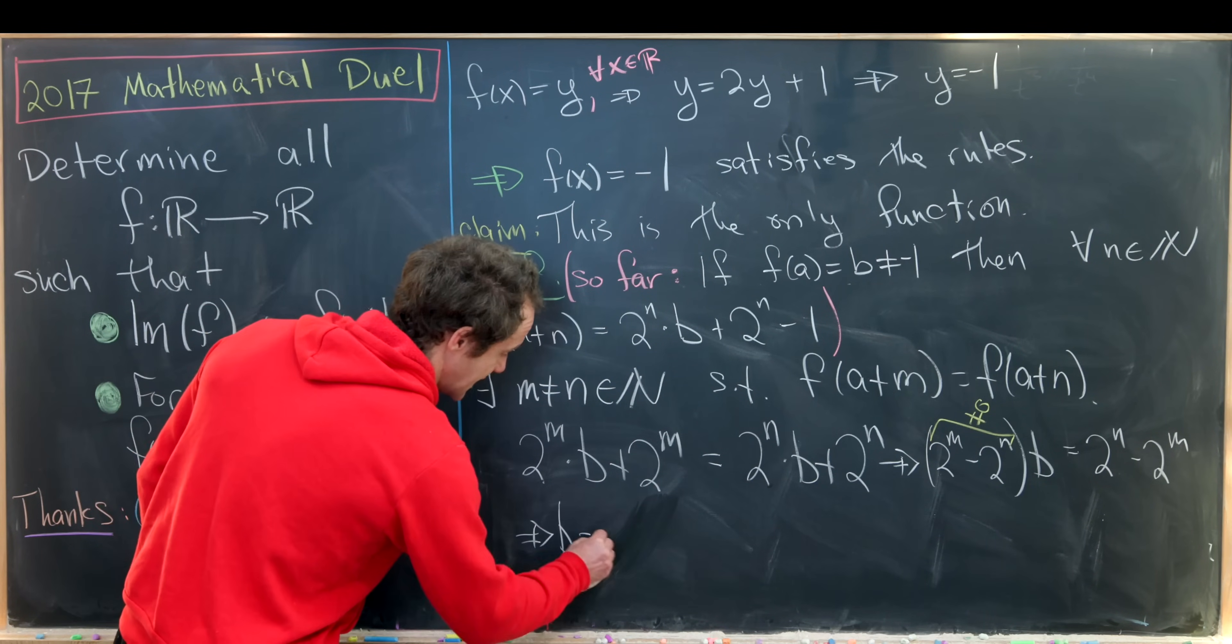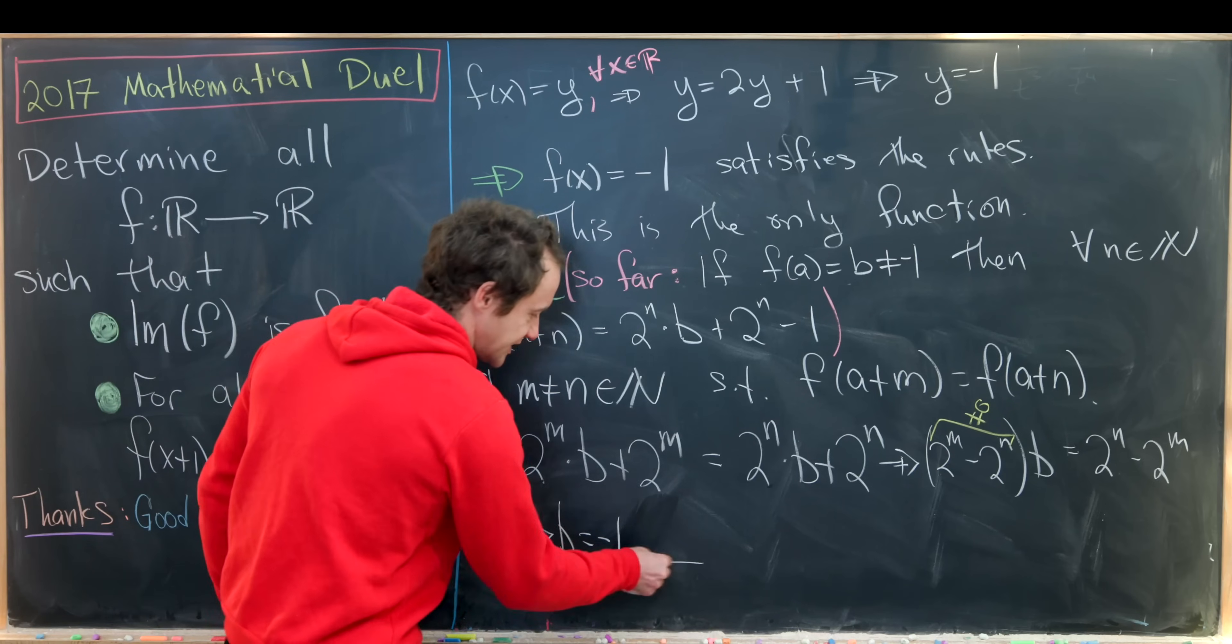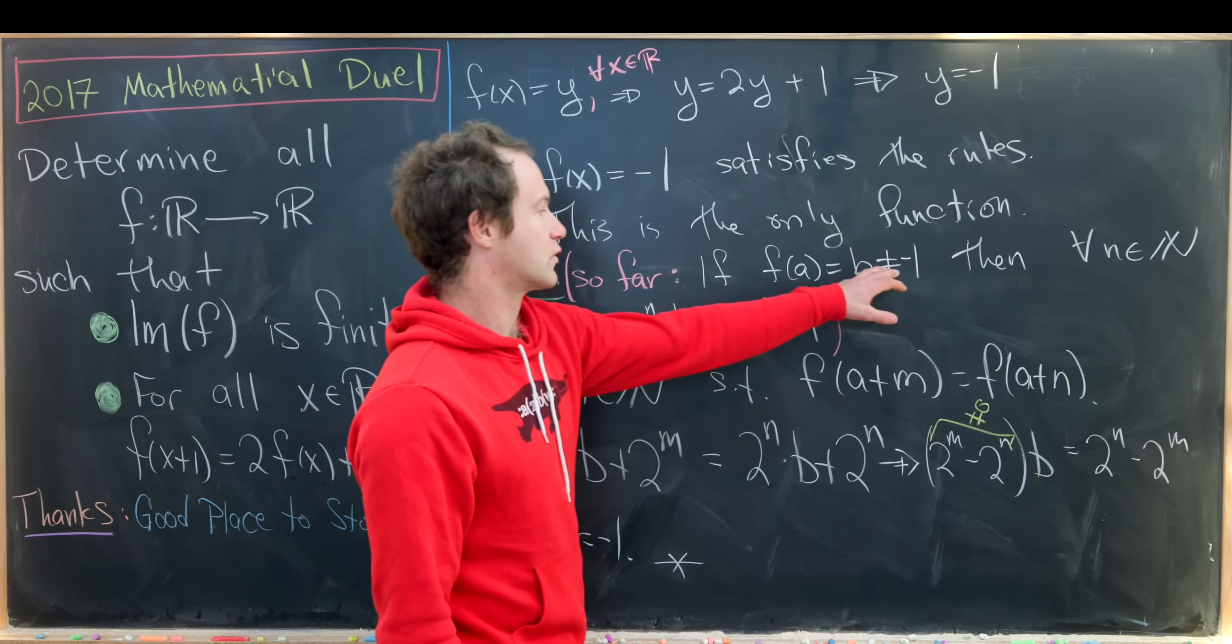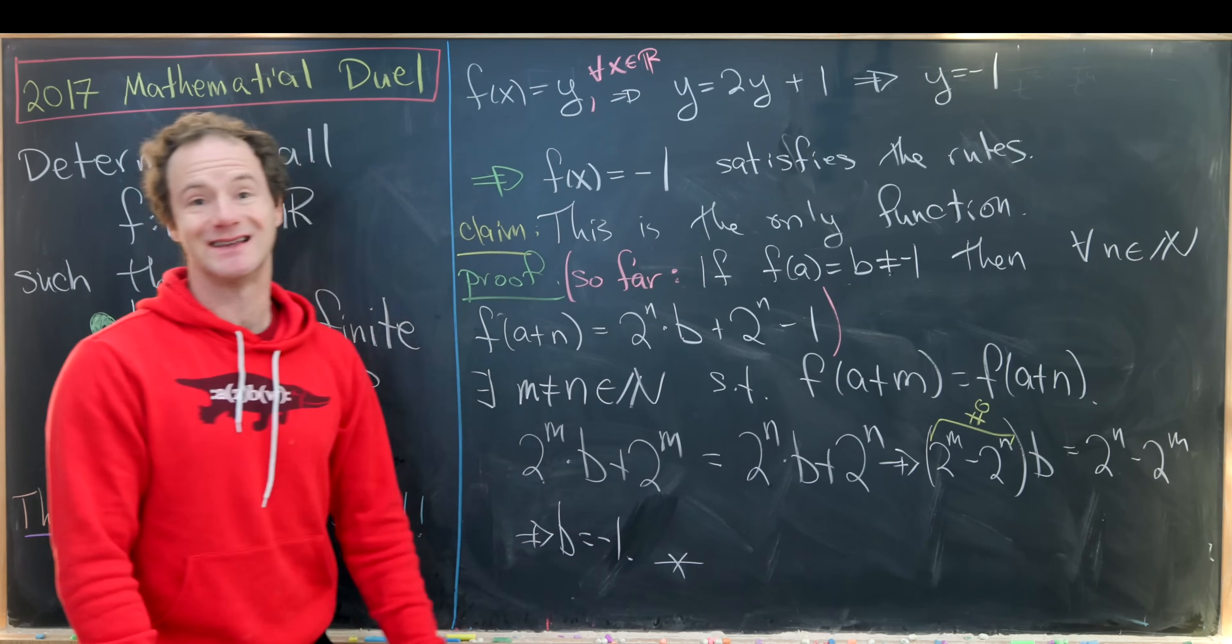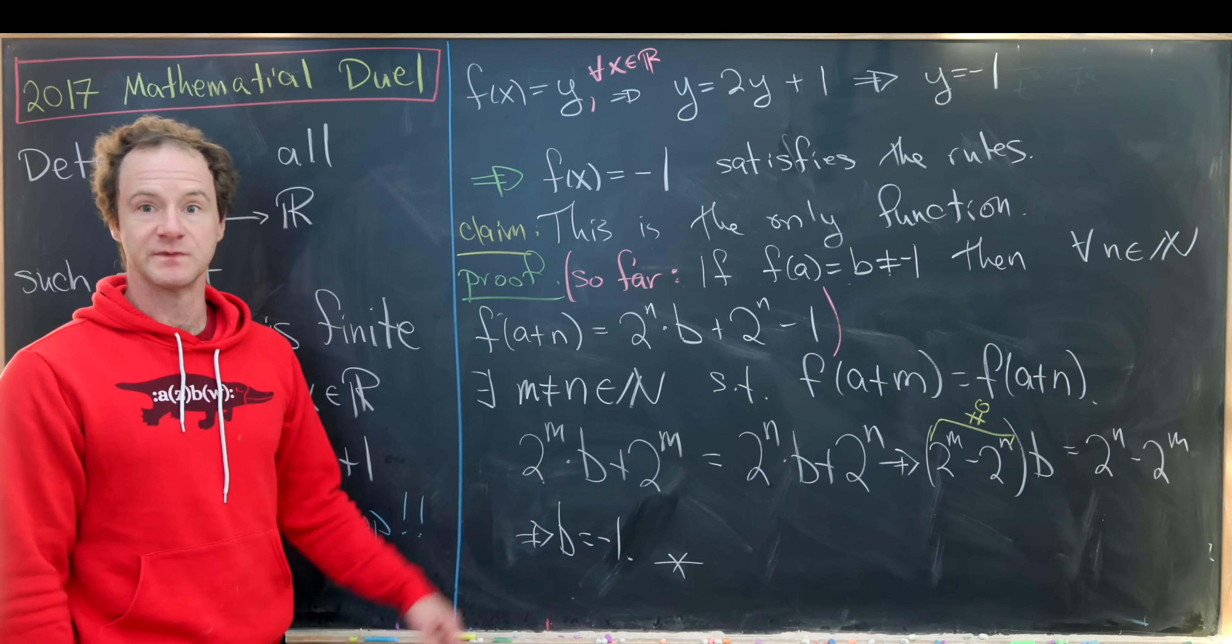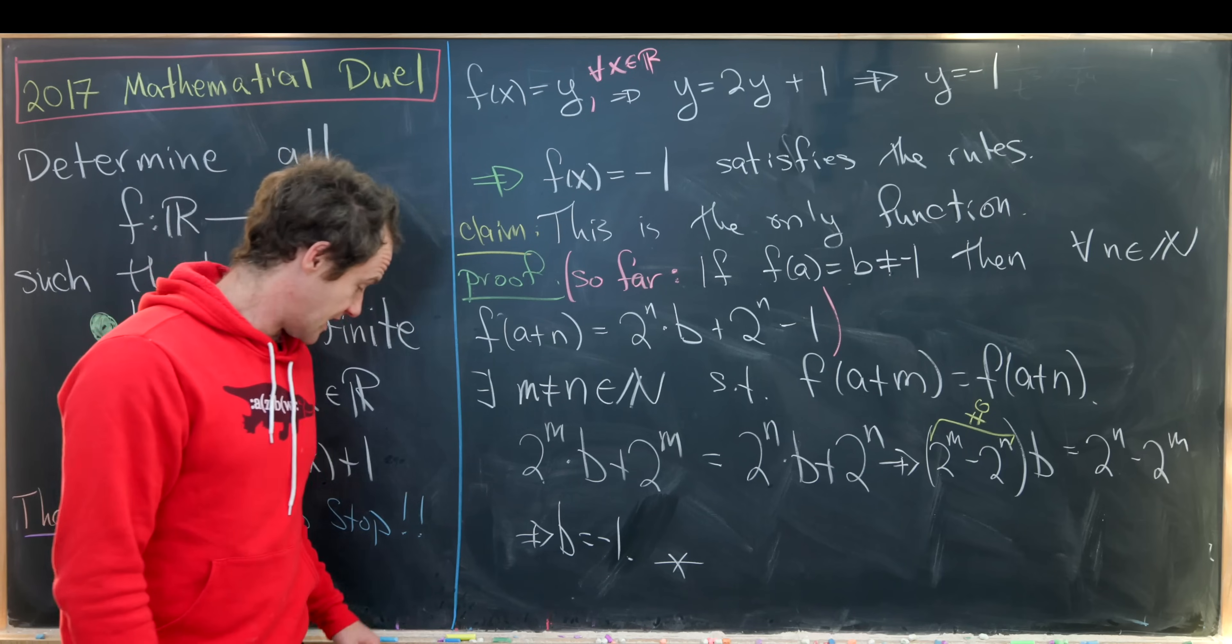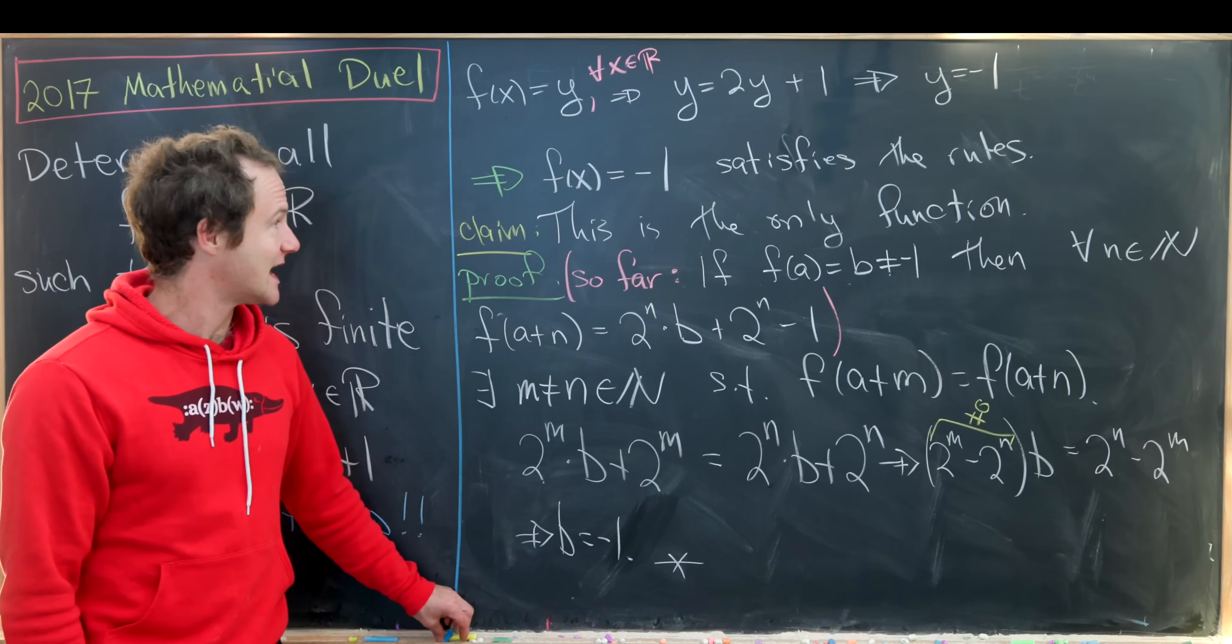that we have b equals minus one. But that's a contradiction towards this original assumption that our function took on a value which was not equal to minus one. So if that is contradicted, then our function cannot take on